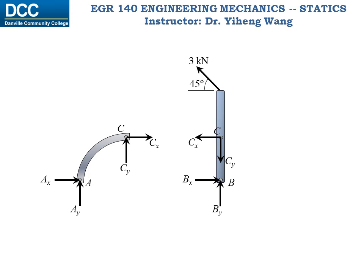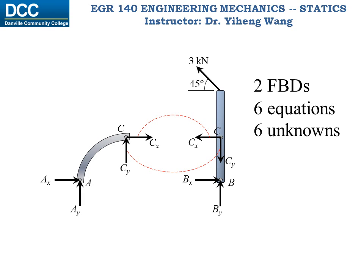Then the forces at joint C, which are internal, now become external and must be included in the two separate free body diagrams. Notice how they are actions and reactions. So we have two free body diagrams, and therefore we can write six equilibrium equations in total. That will enable us to solve for all six unknowns: Ax, Ay, Bx, By, Cx, and Cy.